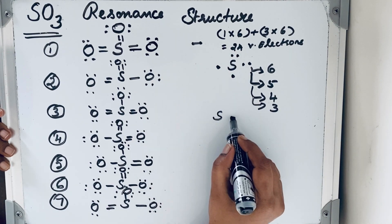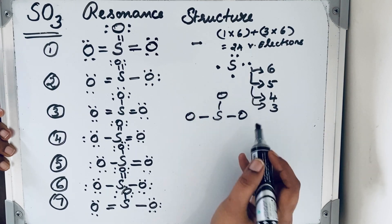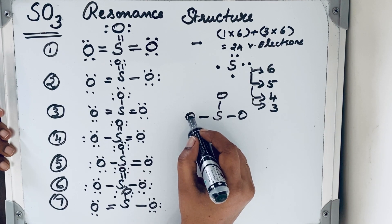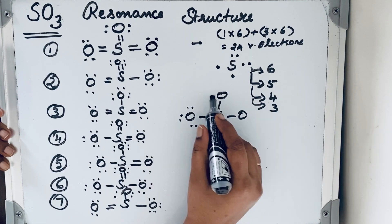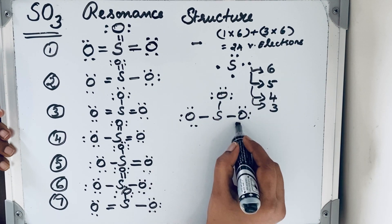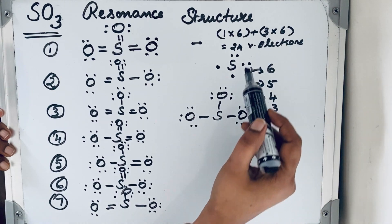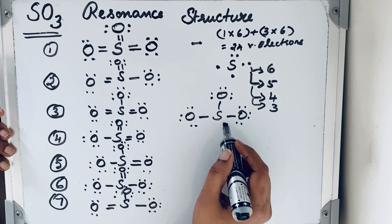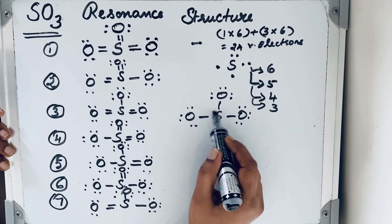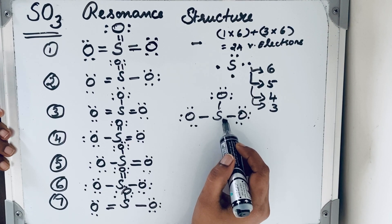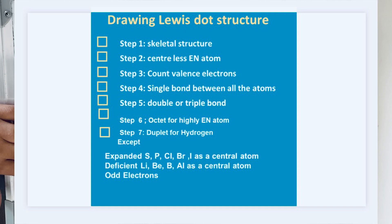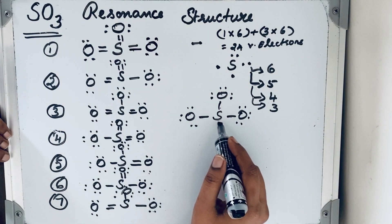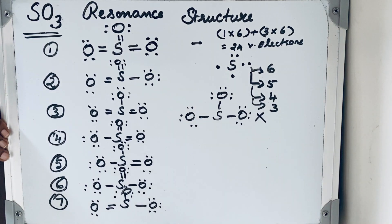Now let us try three bonds — all three S–O bonds as single bonds. Completing the octets on the oxygens gives 24 valence electrons, but look at sulfur: it only has 2, 4, 6 — its octet is not satisfied. Since sulfur is an expanded octet element, it can have 8 or more, but here it has fewer than 8, so this structure is not correct. Therefore, SO3 has exactly seven resonating structures.